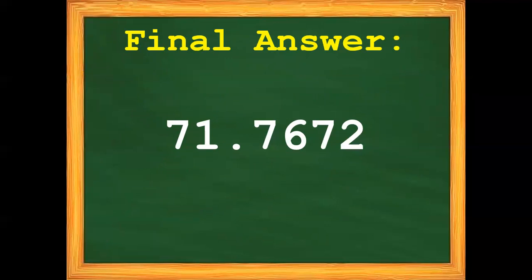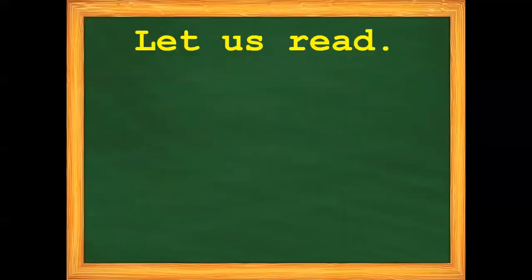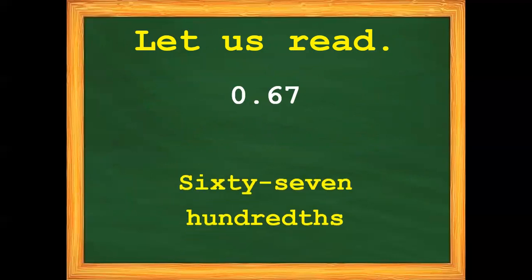So that is the weight of Rino. Now let's proceed with example number 2. But before that, let us read the decimal number first. How do we read this decimal number? Very good — it is 67 hundredths.